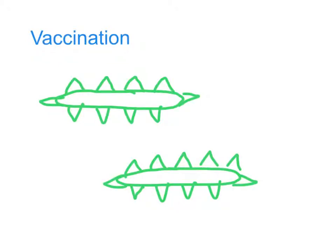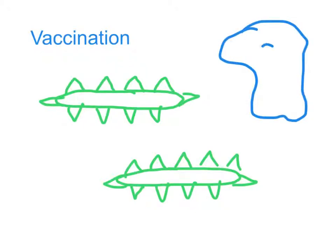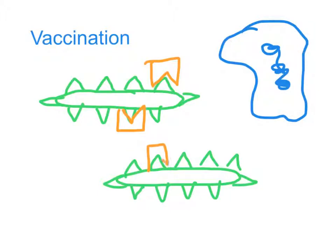Now your white blood cells aren't intelligent enough to realise that those bacteria aren't alive. So they will go about producing antibodies until they find the right sort that fit. Of course in the meantime you're not going to feel ill, because the bacteria are already dead, so they're not going to cause any problem to you. But you are going to become immune to the disease without going through the illness. That's what vaccination is — giving you dead bacteria with the right sorts of antigens on for your white blood cells to produce the right sort of antibodies to kill them.